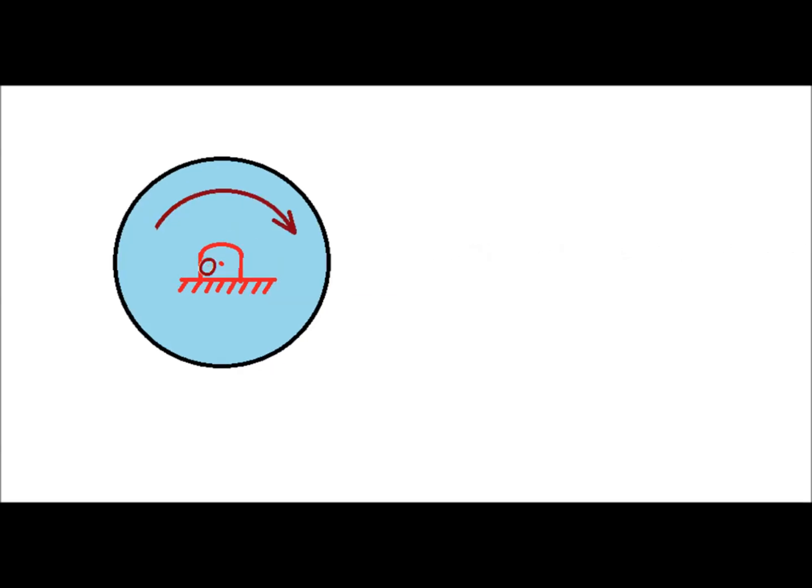Consider a circular disk which is pivoted at center O and rotating in clockwise direction. In other words, we can say there are two links: a fixed link and a second link which is the circular disk. There is a turning pair between the fixed link and circular disk.